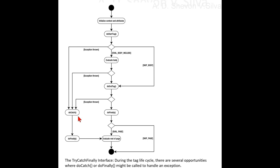The doatch(Throwable t) throws Throwable method is in the TryCatchFinally interface in package jakarta.servlet.jsp.tagext, in module jakarta.servlet.jsp. It is invoked if a Throwable occurs while evaluating the body inside the tag, in any of the following methods: Tag.doStartTag, Tag.doEndTag, IterationTag.doAfterBody, or BodyTag.doInitBody. The doFinally method is invoked in all cases after doEndTag for any class implementing Tag, IterationTag, or BodyTag — even if an exception occurred.